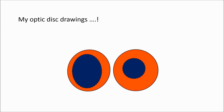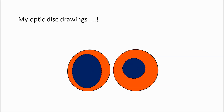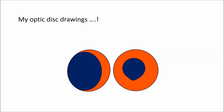I can remember the number of wrong optic disc drawings that I made during my first six months of fellowship training. However, I can remember very well the day when my optic disc drawings were marked as correct. Missing the total loss of the temporal neuroretinal rim at the left optic disc, and the small but significant inferior notch in the neuroretinal rim on the left optic disc, were not allowed in a glaucoma practice.